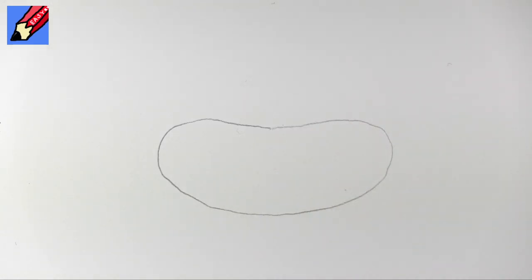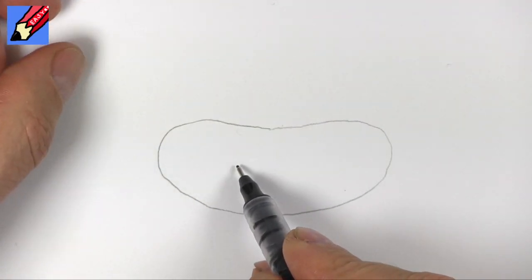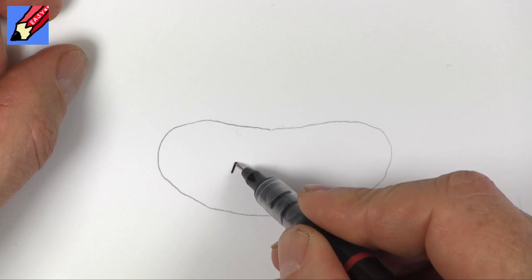It's kind of a sausage shape I suppose that's what it is. Then from the middle come to the side a bit and then go up.